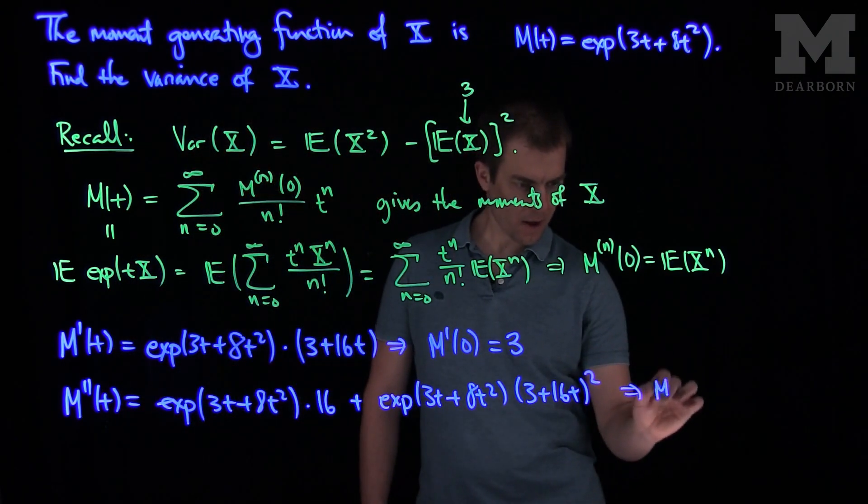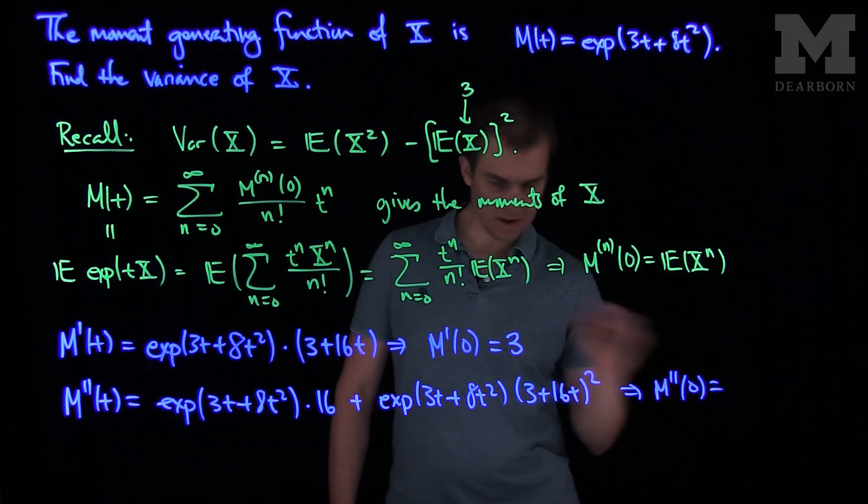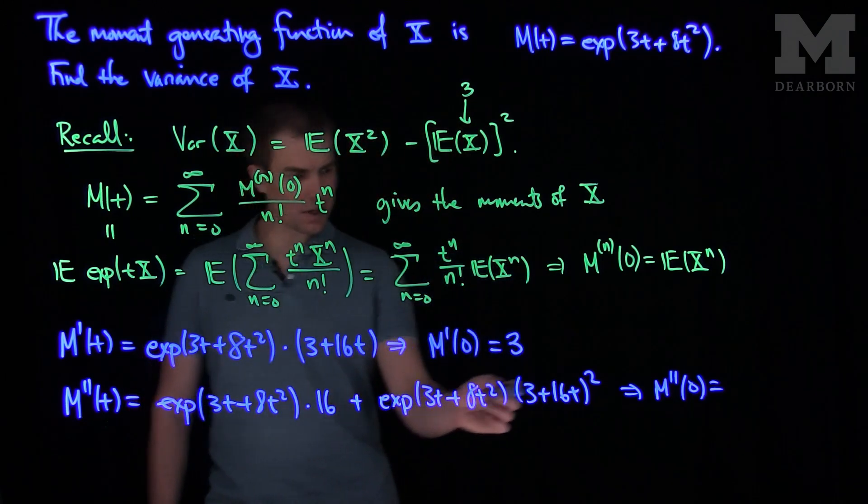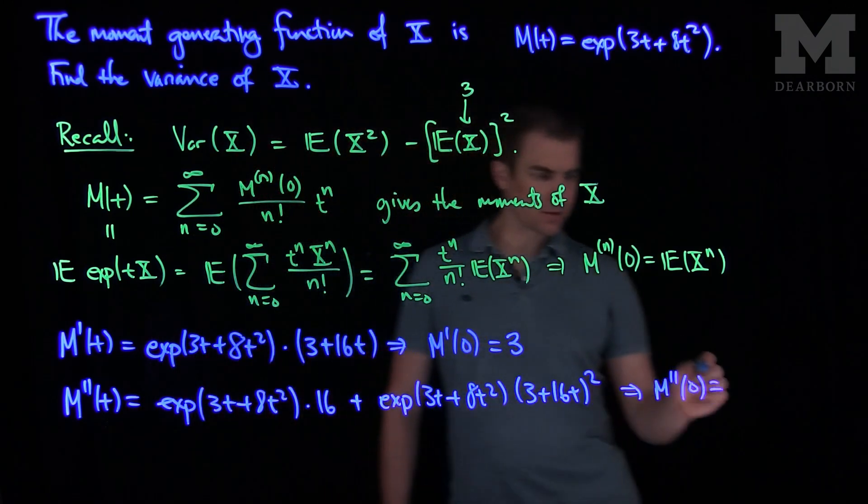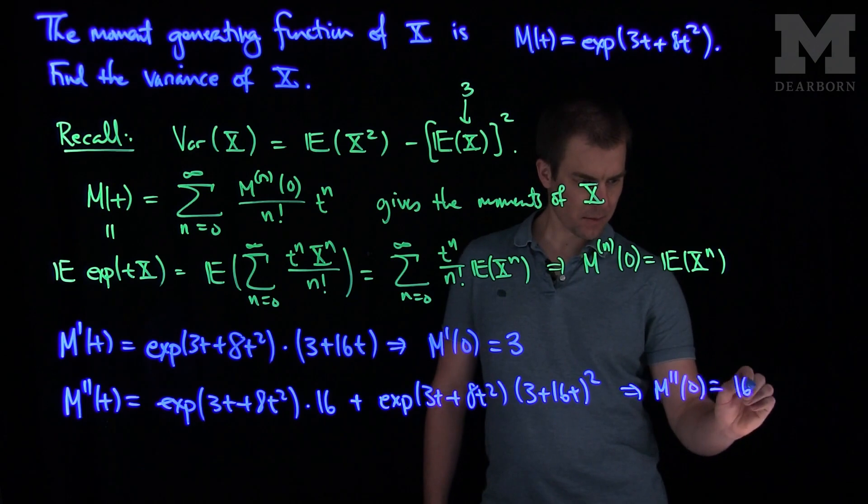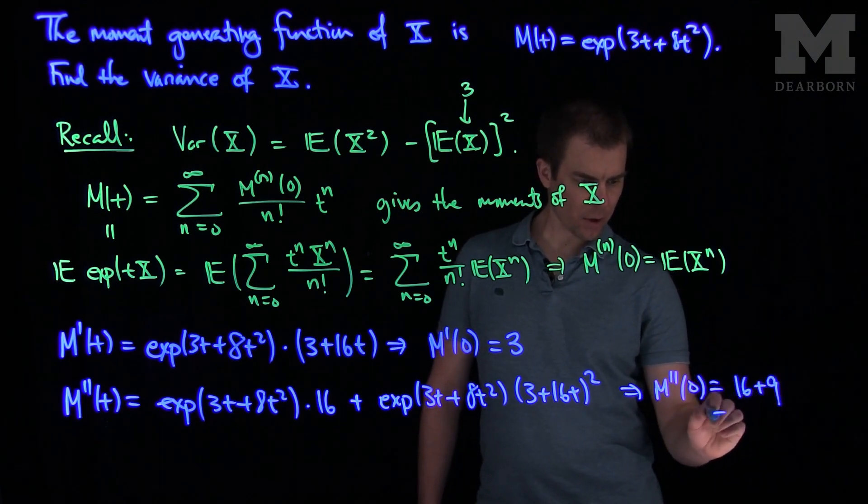And so if we plug in 0 to this, M''(0), we'll get 16 plus 9, which is 25.